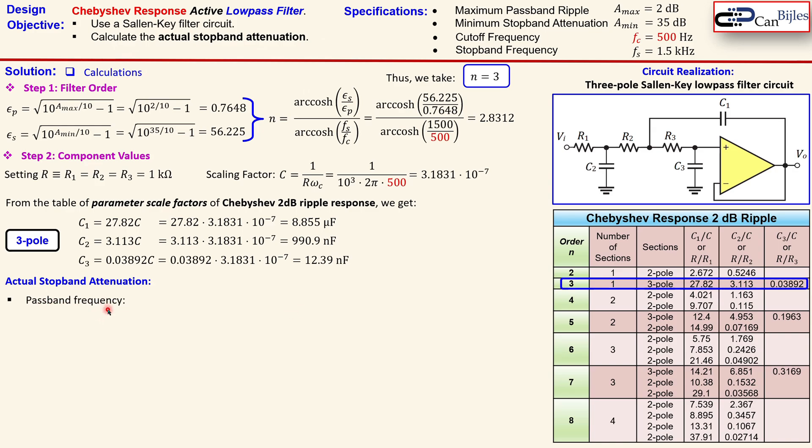For that, we need to first calculate the passband frequency. That's done for the low pass filter Chebyshev response using this formula. You see the cutoff frequency. You see the filter order again and the epsilon p we have determined in step 1.